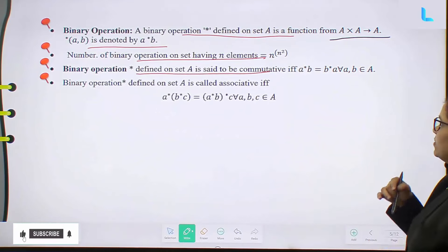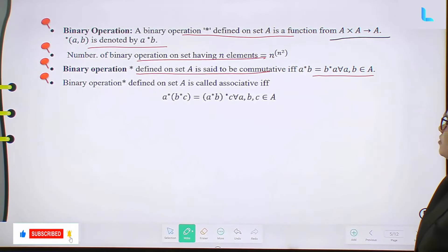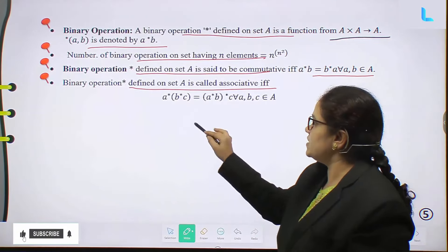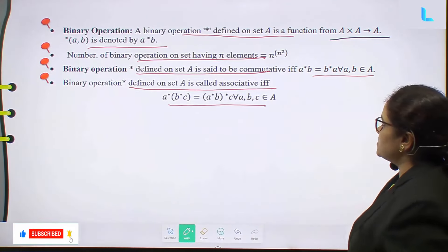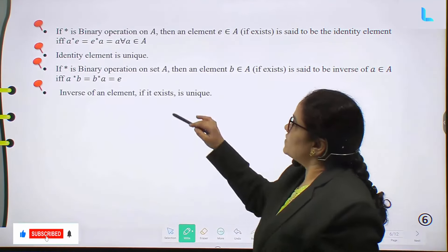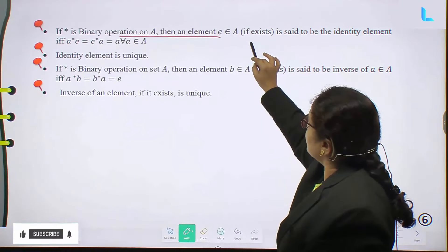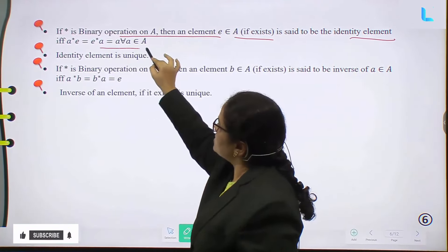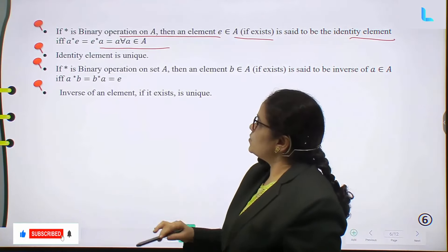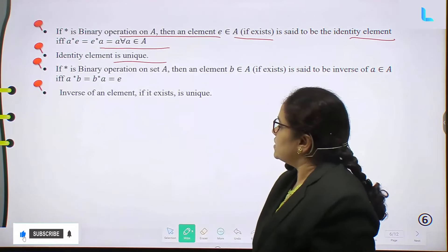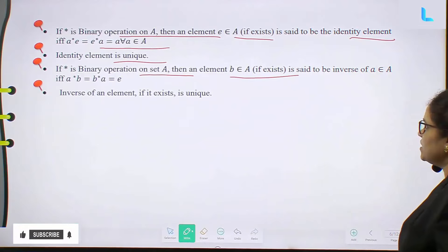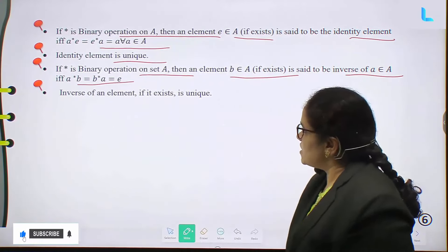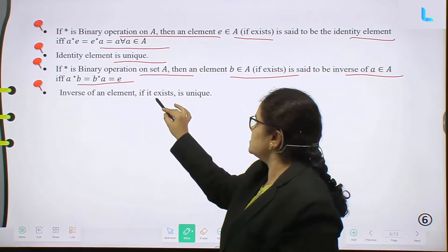A binary operation defined on set A is said to be commutative if A star B equal to B star A, for all A, B belonging to A. If star is a binary operation on A, then an element E belonging to A is called the identity element if A star E equal to E star A equal to A, for all small a belonging to capital A. The identity element is unique. An element B belonging to A is said to be the inverse of a belonging to A if A star B equal to B star A equal to E. The inverse of an element, if it exists, is unique.